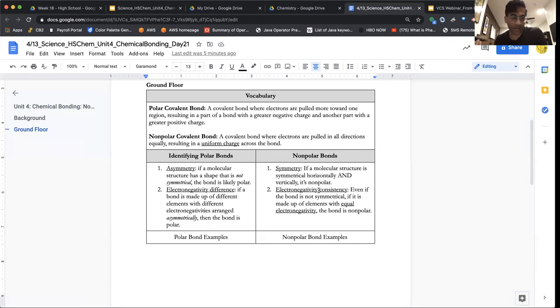So in addition to the lesson, which is great, I just wanted to go through some basic rules for identifying polar versus non-polar. We're looking for asymmetry if we're identifying a polar bond, and we're looking for symmetry if we're identifying a non-polar bond. Now specifically with non-polar, we're looking for symmetry in a horizontal and a vertical direction as well.